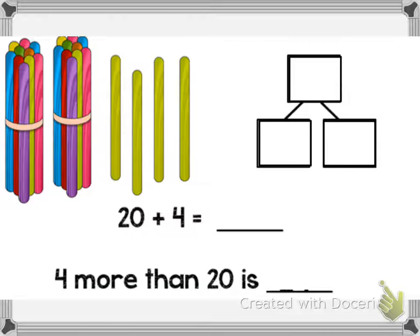Hi guys, Miss Perkins here. Today we're talking about module 4 lesson 4. In this lesson we're talking about being able to write and interpret two-digit numbers as addition sentences that combine tens and ones.